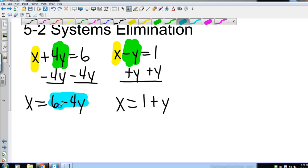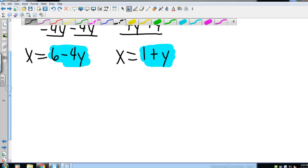Now if x is equal to itself, then that means that these two things have to be equal to each other because they both equal x, which is the same thing. So what I'm going to do is I'm going to take 6 minus 4y and I'm going to set it equal to 1 plus y, again because they equal x, they have to equal each other.